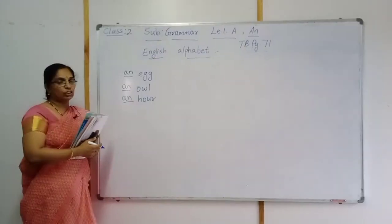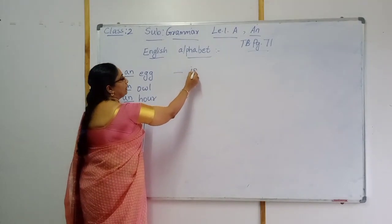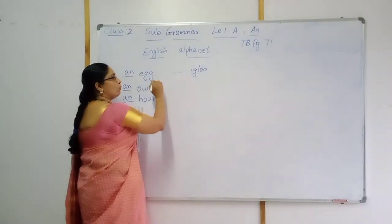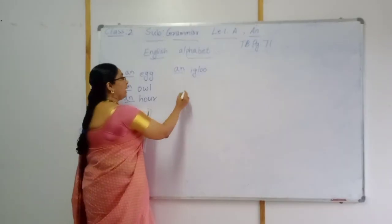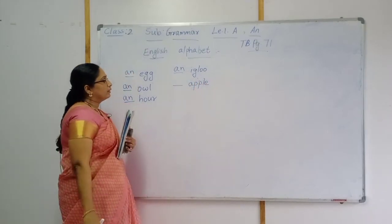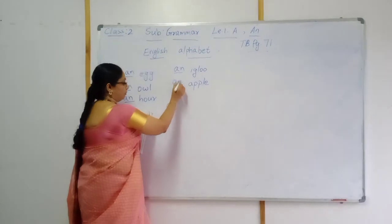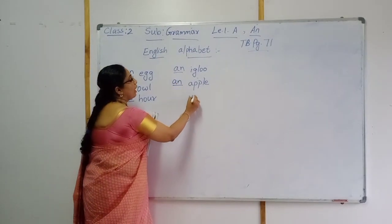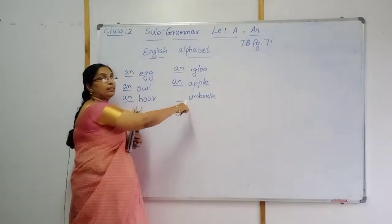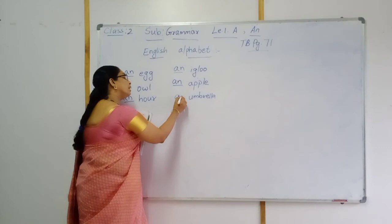There are more and more examples, children; we can learn afterwards. Next — igloo. First letter I, that is a vowel, so AN igloo. Next one is uphill — first letter U, that is a vowel, so AN uphill. Umbrella — first letter U, so AN umbrella.